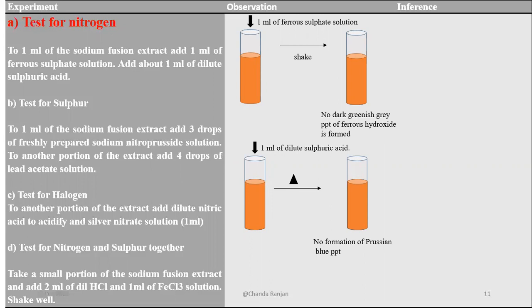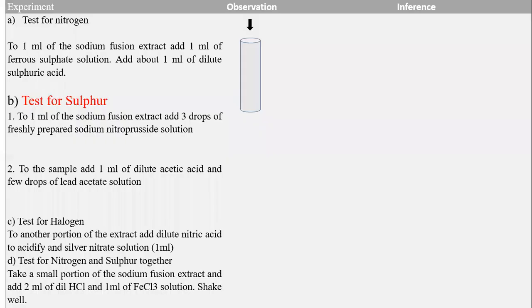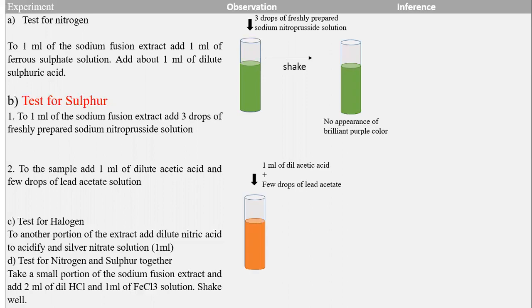Here we are not getting the Prussian blue color, so nitrogen is absent. We will follow with the test for sulfur. We take the test tube with the sample and add 3 drops of freshly prepared sodium nitroprusside solution and shake it. If we get a brilliant purple color, it shows the presence of sulfur; absence of color indicates absence of sulfur.